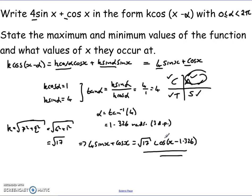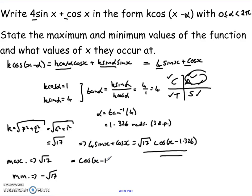Now we can fairly quickly and easily read off our maximum and minimum values. Remember, the maximum value for cosine is 1 and the minimum is −1, so the maximum and minimum values for k cos are just k and −k. So the maximum value is √17 and the minimum value is −√17. To find where they occur, we look at the transformation on the graph.